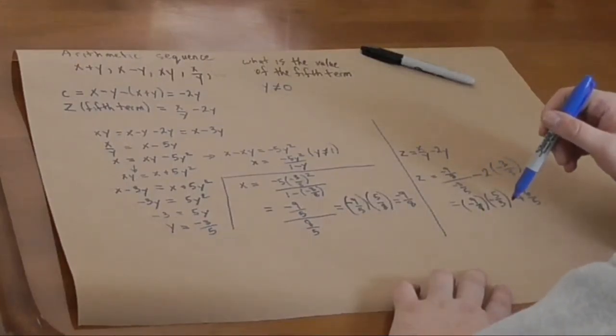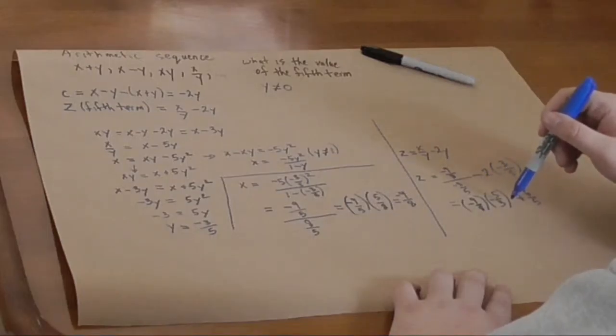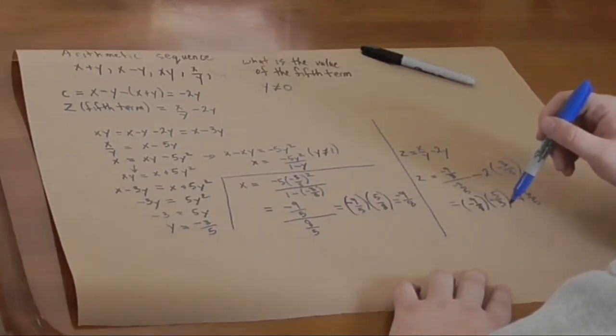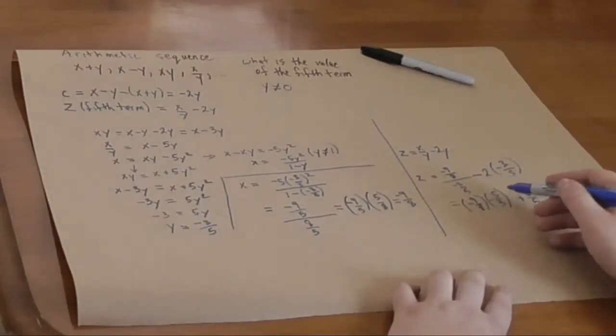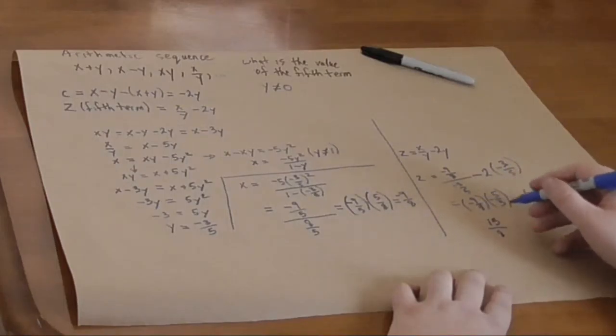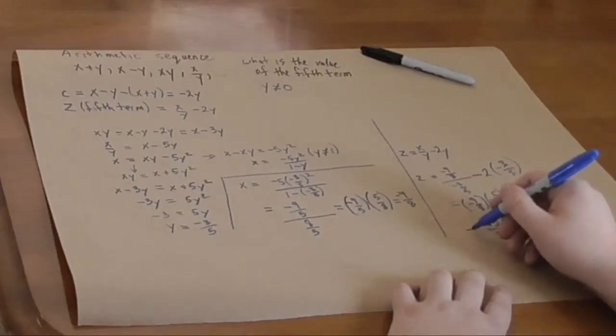So, we can see that we can simplify here. 3 goes into the 9 here. So, we can cancel that down. 3 turns into 1, 9 turns into 3. So, that's 3 times 5 is 15 over 8 times 1, 8. And these are both negatives. So, it's positive when you multiply. Plus 6 over 5.